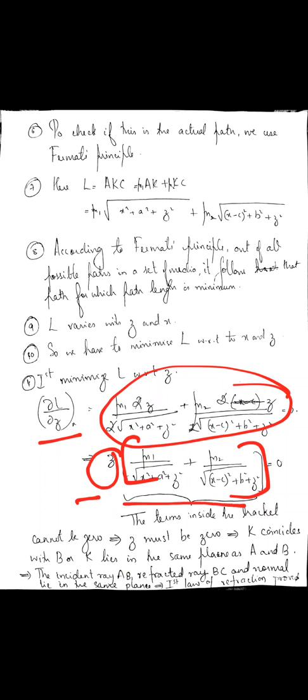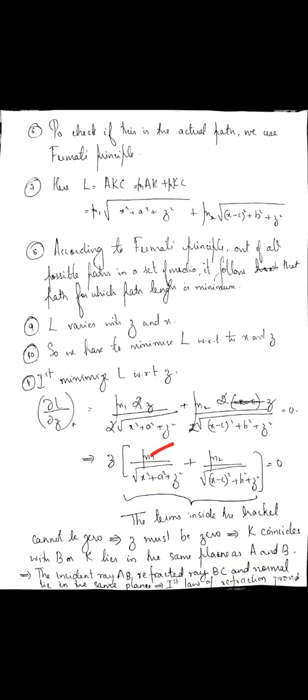Z times the terms inside the bracket equals zero. The terms inside the bracket involve mu1, mu2, a, c, b, etc., which are all non-zero numbers. So the bracket can never be zero. Therefore, Z must equal zero.